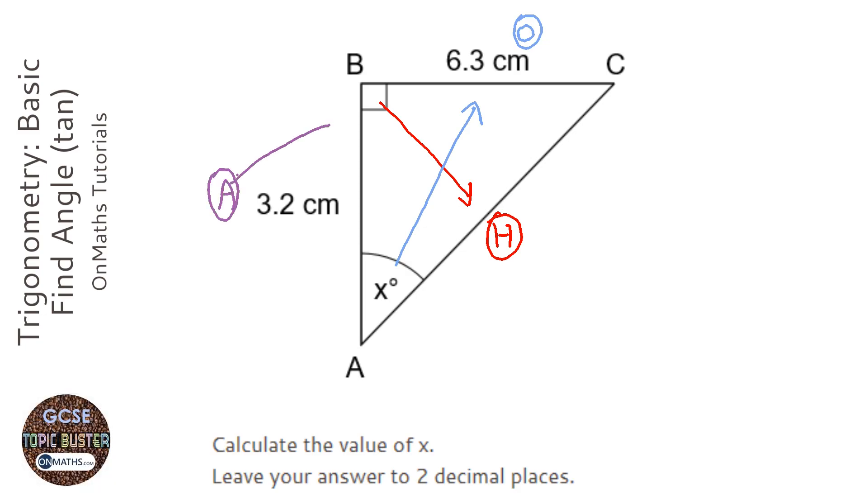Next step: cross out the one we're not using. A has 3.2 next to it, O has 6.3 next to it, and the hypotenuse has nothing next to it, so that's not going to be used today.